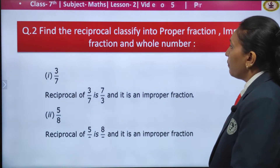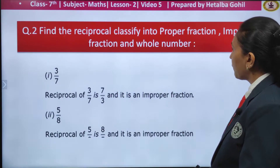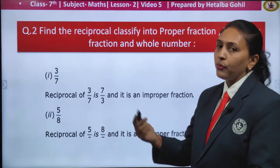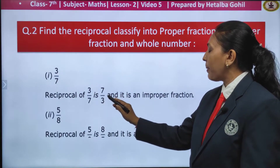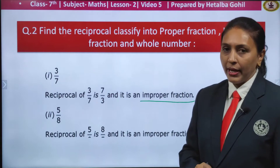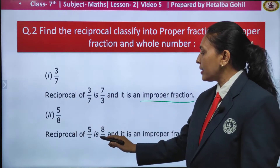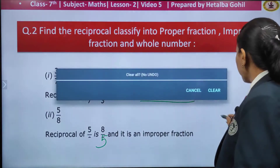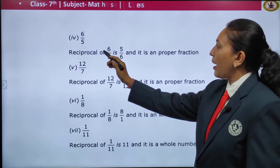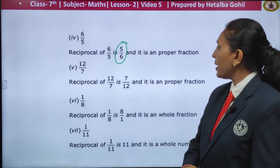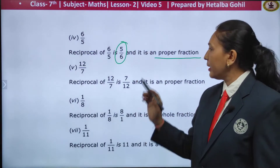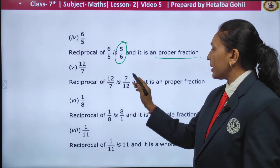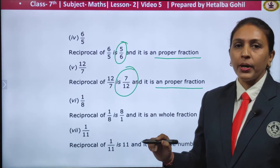Question number 2: find the reciprocal, classify into proper fraction, improper fraction, and whole number. The first one is 3 by 7 — reciprocal of 3 by 7 is 7 by 3, which is an improper fraction. Second one: 5 by 8 — the reciprocal is 8 by 5, which is an improper fraction. The next one: 6 by 5 — the reciprocal is 5 by 6, but as the numerator is smaller than the denominator, it is a proper fraction. Next: 12 by 7 — the reciprocal of 12 by 7 is 7 by 12, which is also a proper fraction.